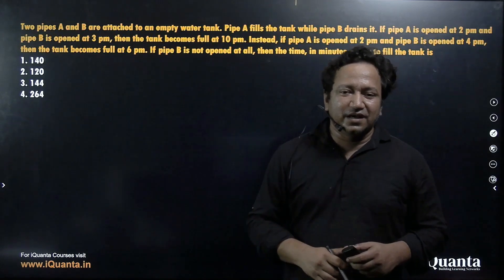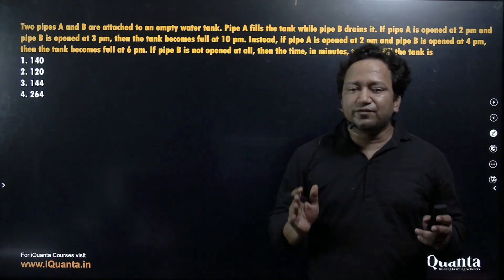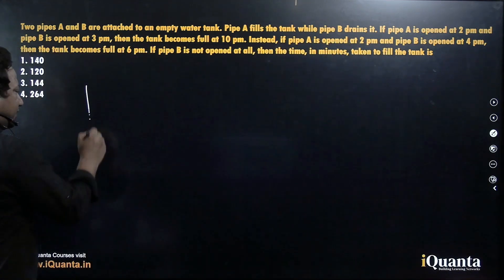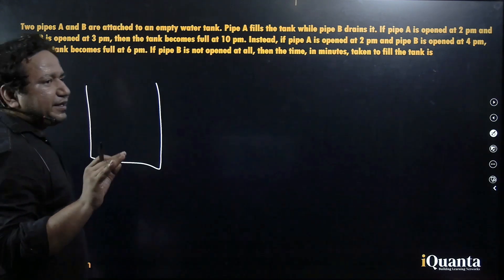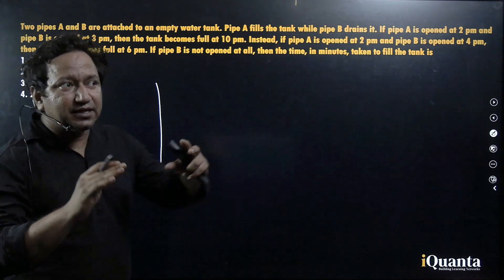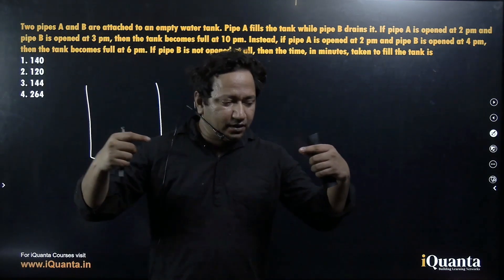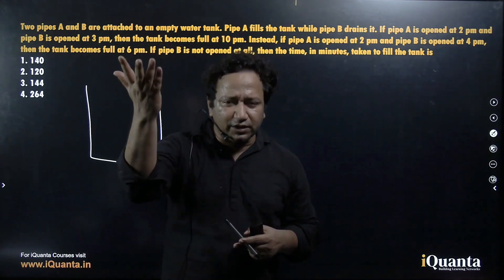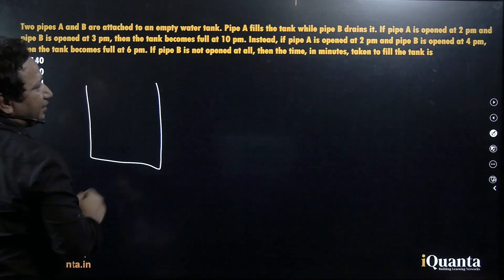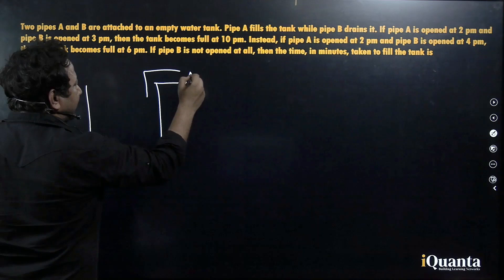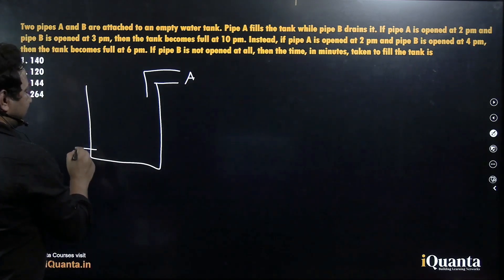Second question. Two pipes, A and B, are attached to an empty water tank. So I'll give you a very important insight. Any kind of arithmetic question, TSD or time and work, we should actually start visualizing the diagrams. Like in the last case, I drew the trains. Here, I'm drawing the tank and the pipe. This is something which you can draw in your mind also. If not, you always have the pen and paper. So pipe A is basically the pouring pipe. Let this be pipe A. And pipe B is the emptying pipe. Let this be pipe B.